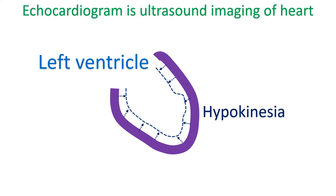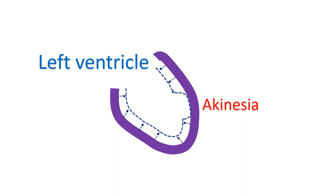Akinesia means a region of the heart muscle is not contracting at all. It usually indicates total damage to the heart muscle, again commonly due to blocks in the blood vessels supplying the region. The region may also be scarred and thin in long-standing cases.